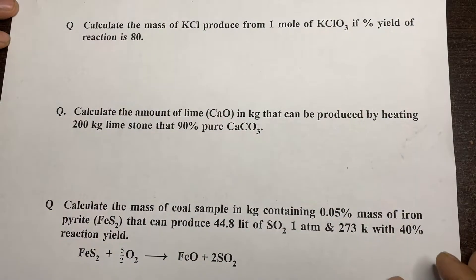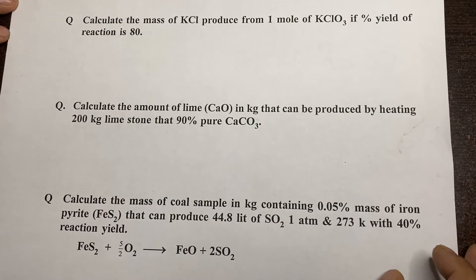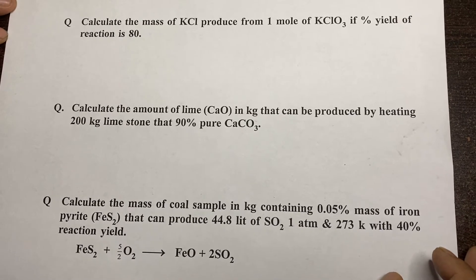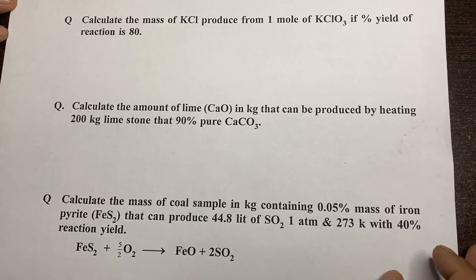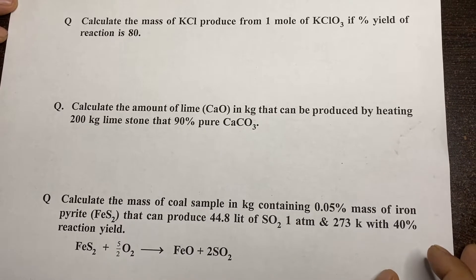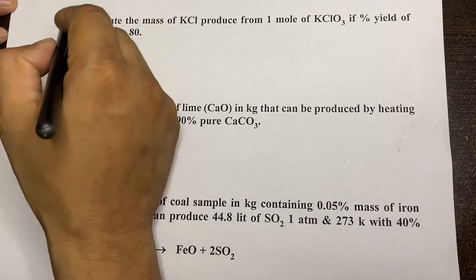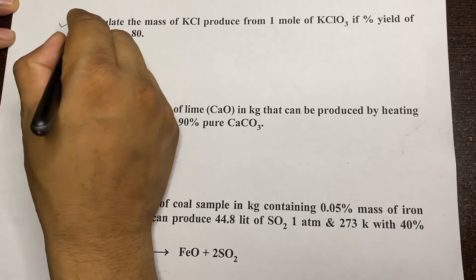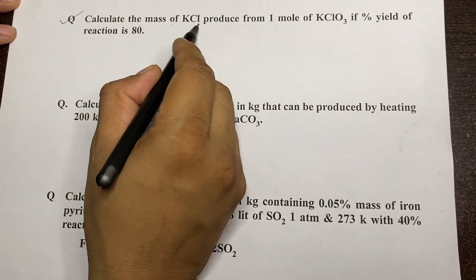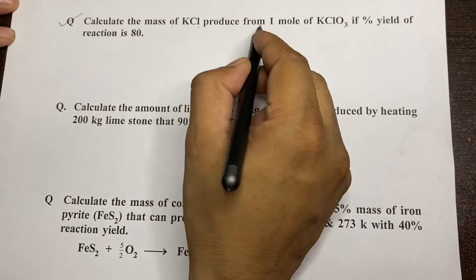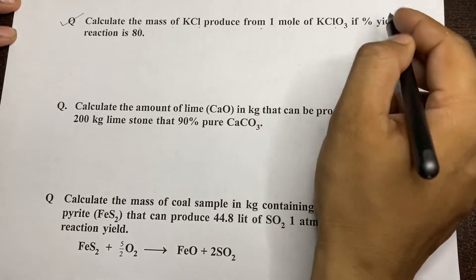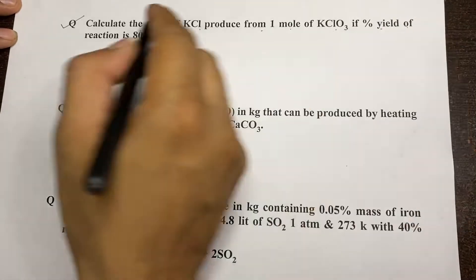Hello students. In this video we will discuss more problems on percentage yield and percentage purity of reactions. We can take the first example: calculate the mass of KCl produced from one mole of KClO₃ if the percentage yield of the reaction is 80%.